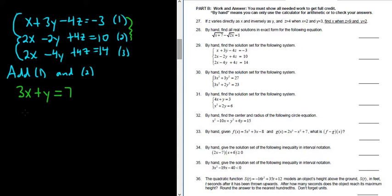Now let's add equations 1 and 3. Adding the first and the last equations, x plus 2x is 3x again. 3y plus negative 4y is negative y. Negative 4z plus 4z is 0. And then negative 3 plus 14 is 11. So we get 3x minus y equals 11.